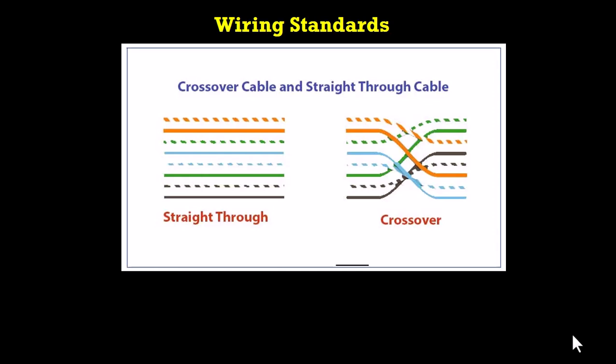For the straight-through cable, both ends have the T568B standard. The pin assignments are: pin 1 is white/orange, pin 2 is orange, pin 3 is white/green, pin 4 is blue, pin 5 is white/blue, pin 6 is green, pin 7 is white/brown, and pin 8 is brown. For the crossover cable, one end follows T568A while the other end follows T568B.